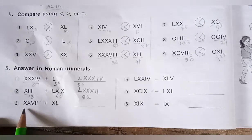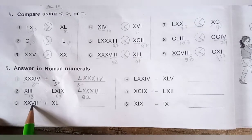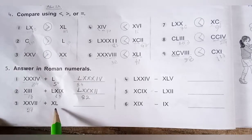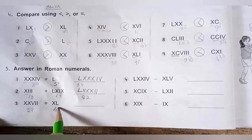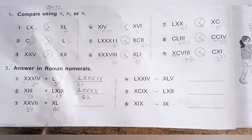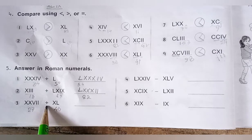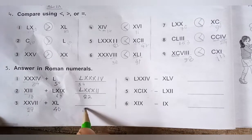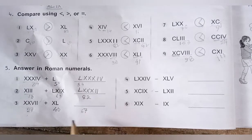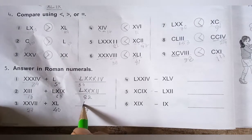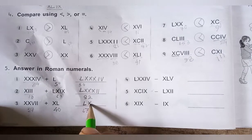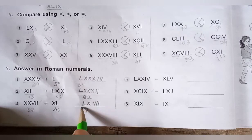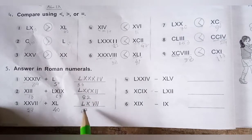Question number 3 of question 5: one numeral represents 27 and the other represents 40 (50 minus 10). It is an addition problem, so 40 plus 27 equals 67. To write 67 in Roman numerals: 50 plus 10 is 60, and then 7 is VII, giving LXVII.